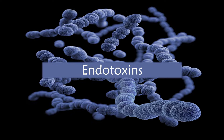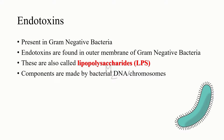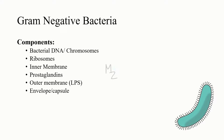If you're new to my channel, a very warm welcome to you. Endotoxins are present in gram-negative bacteria — they are found in the outer membrane of gram-negative bacteria. If you remember the outer membrane of gram-negative bacteria from my bacterial structure video, this is going to be really easy. Endotoxins are also called lipopolysaccharides, or LPS. These are components made by bacterial DNA or chromosomes.